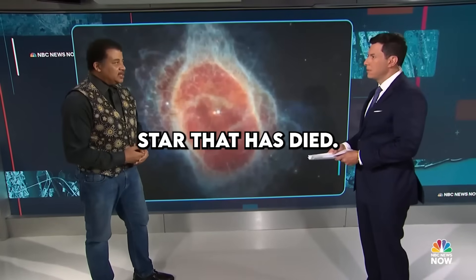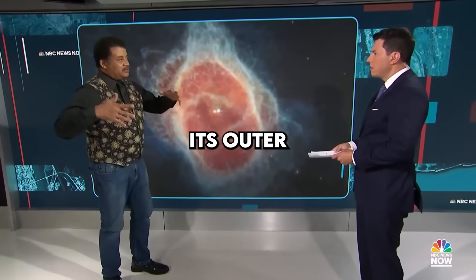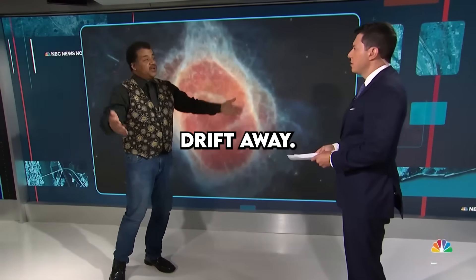These are the remnants of a star that has died. The sun will have a fate such as this, where at the end its outer layers of gas will escape into space and slowly drift away.